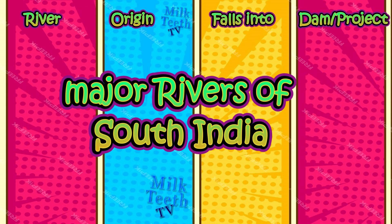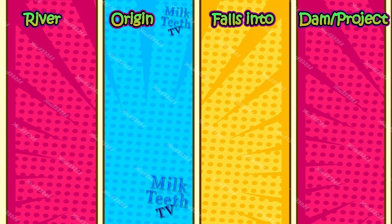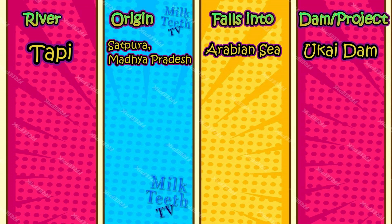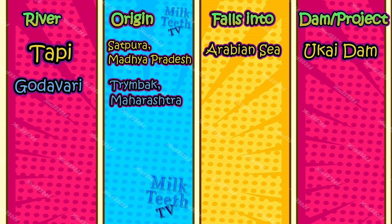Major rivers of South India. River Tapi: it originates from the Satpura Range in Madhya Pradesh and falls into the Arabian Sea. The Ukai Dam is constructed over the River Tapi. Godavari, also known as Dakshin Ganga, originates from Tryambak in Maharashtra.